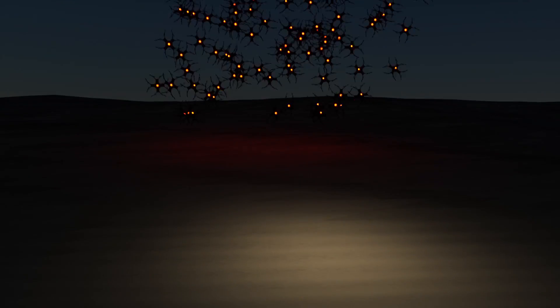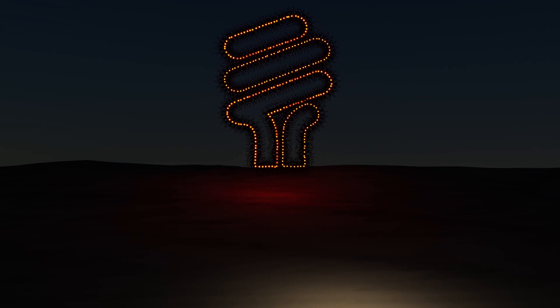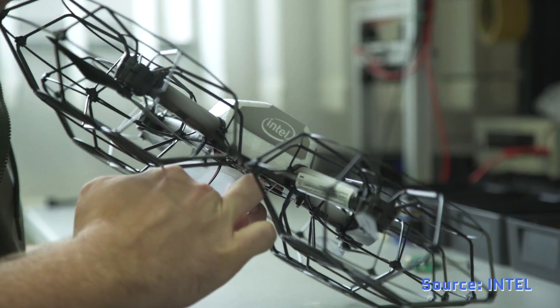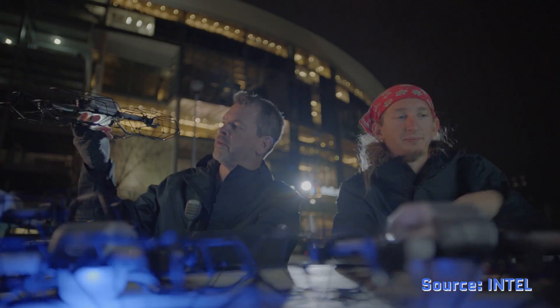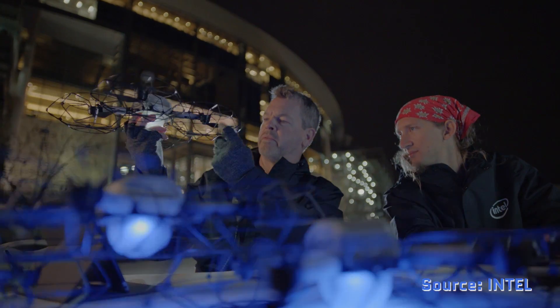You have to make sure that the courses you plot won't bring two drones too close together, or else you'll have a collision. Fortunately, Intel's Shooting Star drones are made of lightweight materials like foam and plastic, and their rotors are inside protective cages, so even if something unexpected happens, the chances for real catastrophe are low.